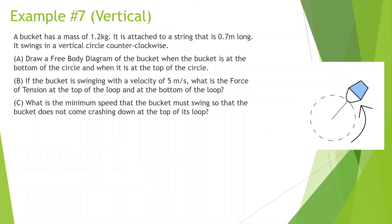Let's look at our first example problem. A bucket has a mass of 1.2 kilograms. It's attached to a string that is 0.7 meters long. It is swung in a vertical circle clockwise. Draw a free body diagram of the bucket when the bucket is at the bottom of the circle and when it is at the top of the circle.